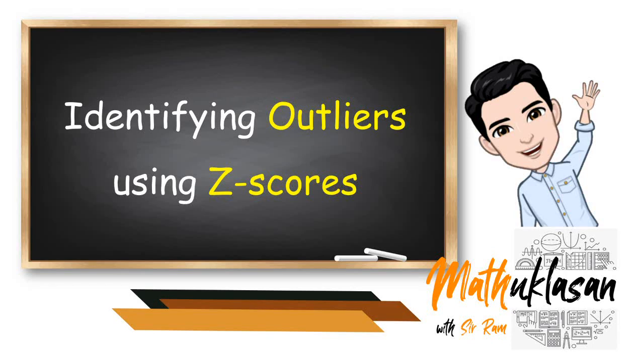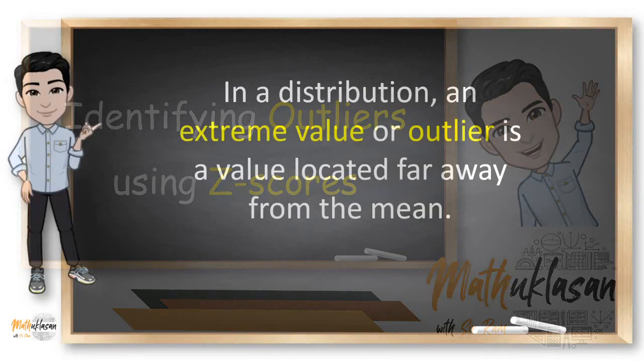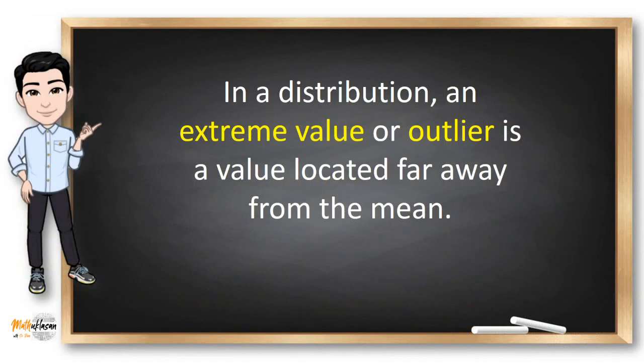Hello, my name is Ram and welcome to another video of Matoclasan. In statistics, an outlier is a data point that differs significantly from other observations.